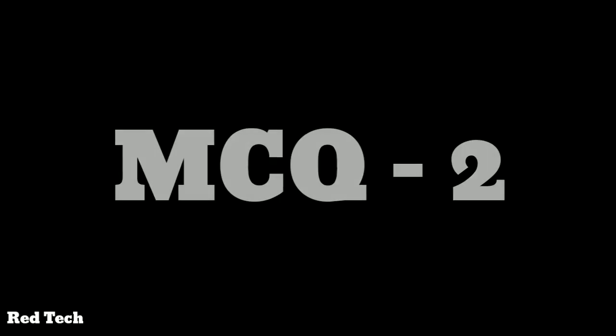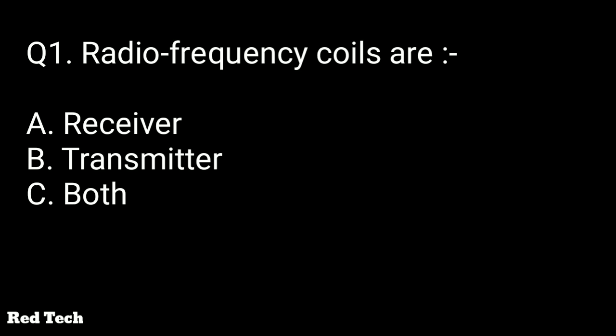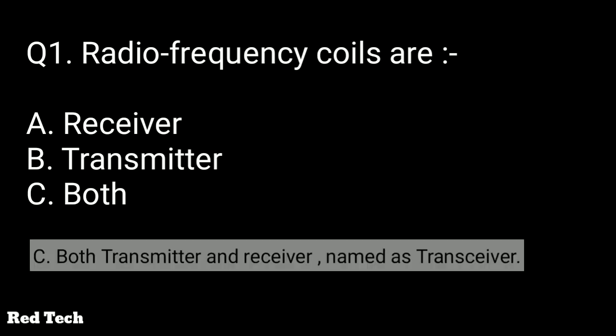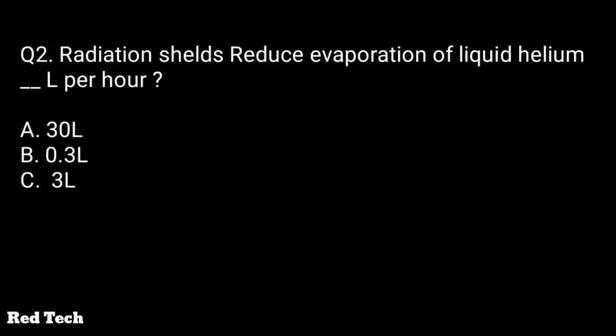Question number one: radio frequency coils are — option: receiver, transmitter, or both? The answer is both, meaning receiver and transmitter. The term for this is transceiver.